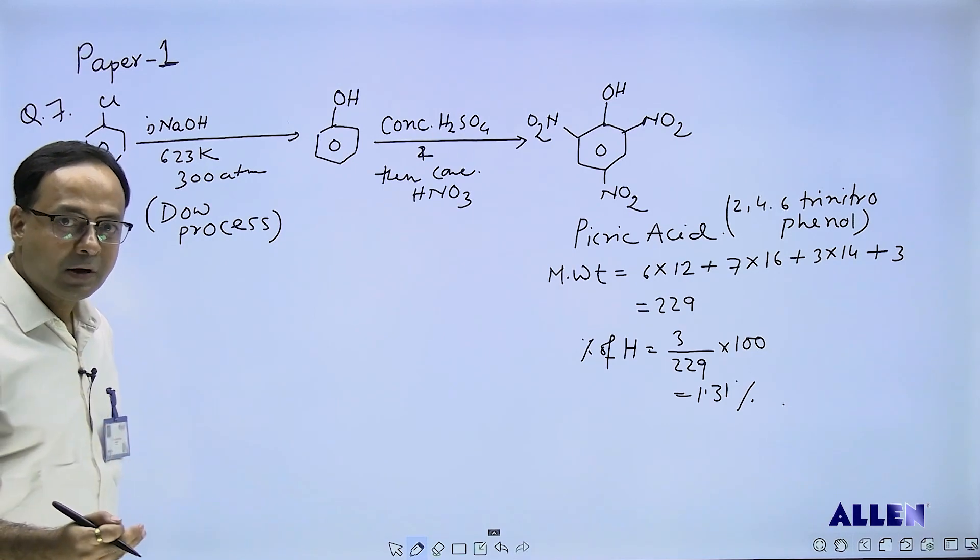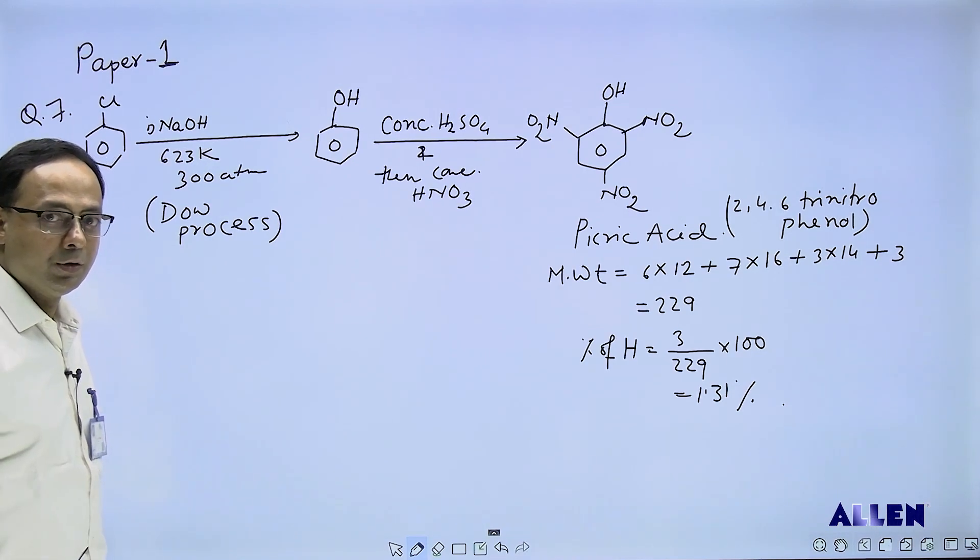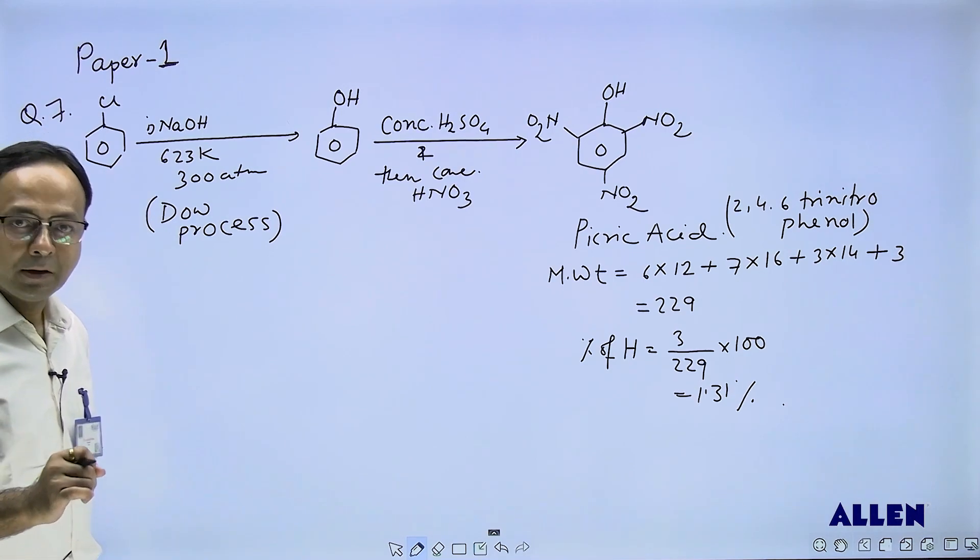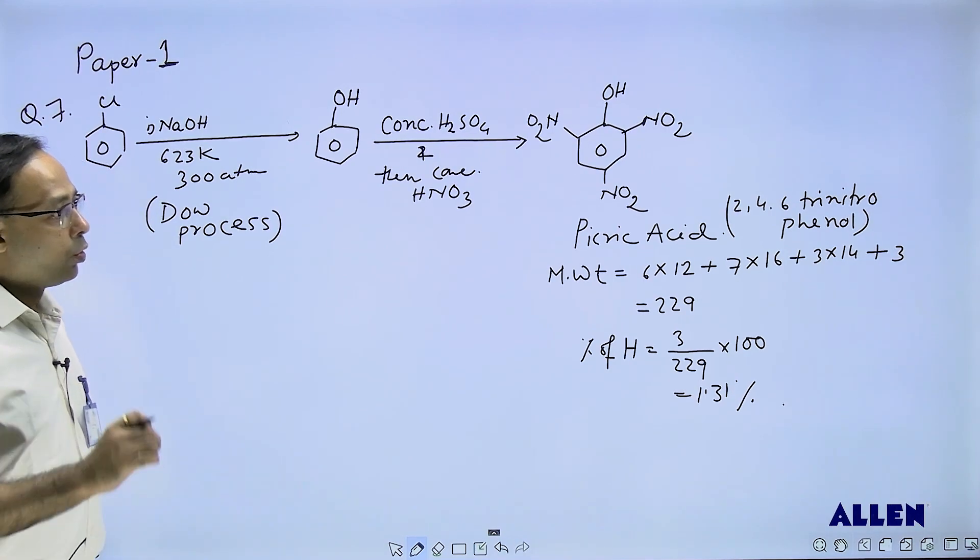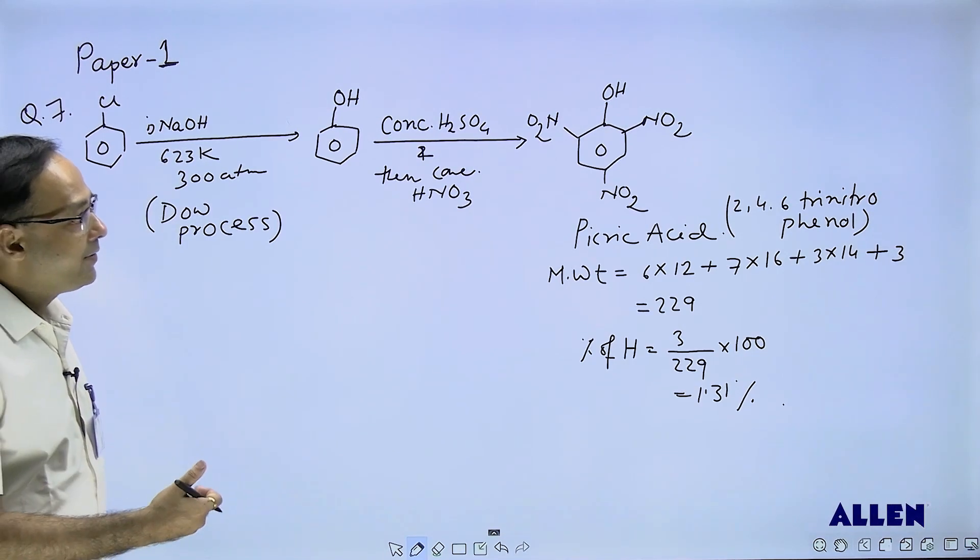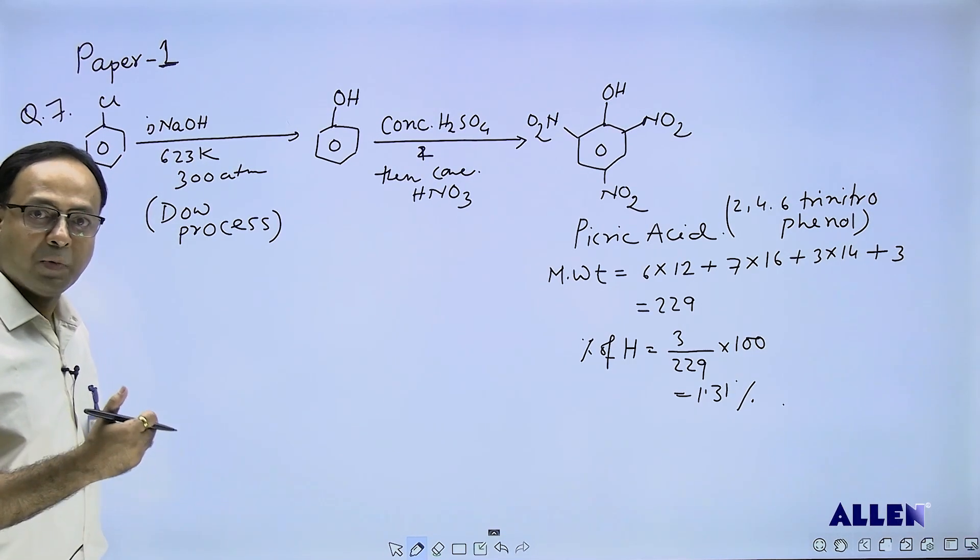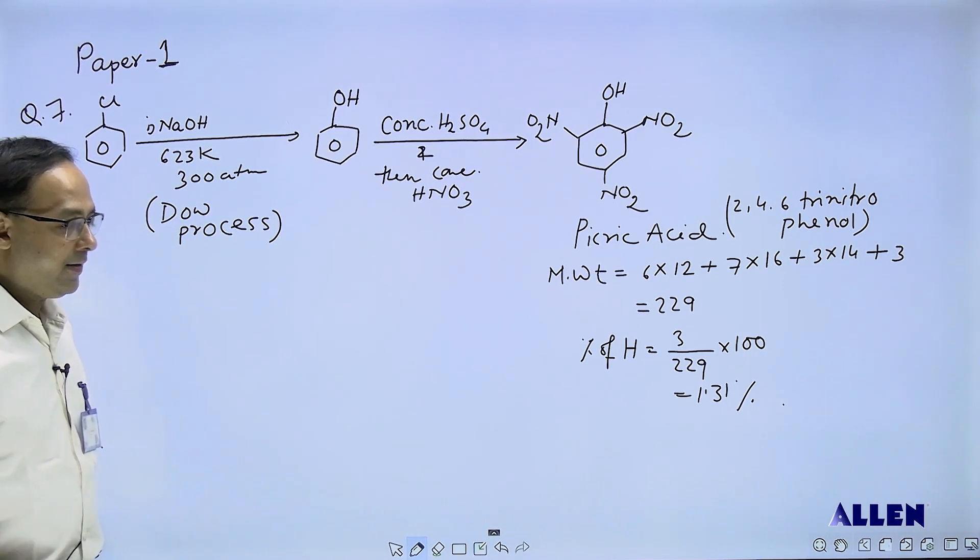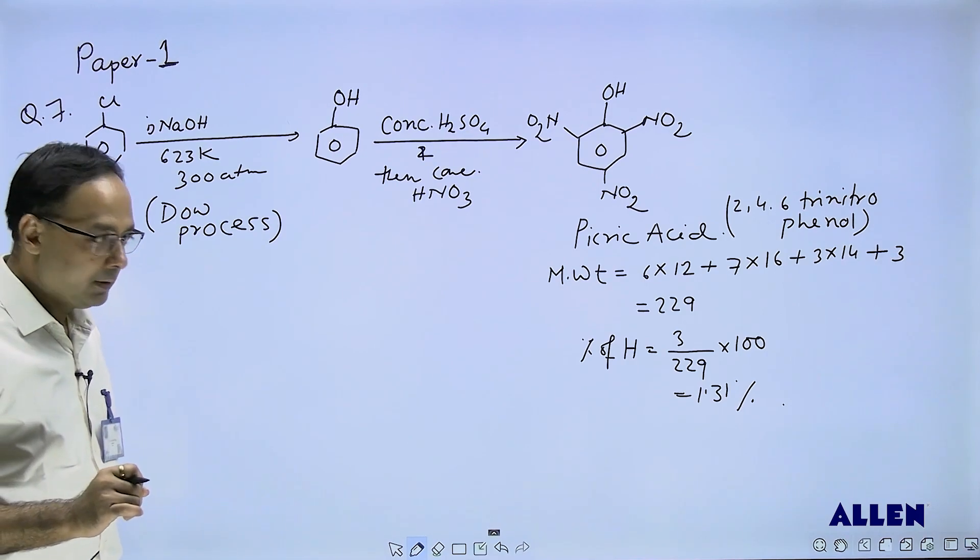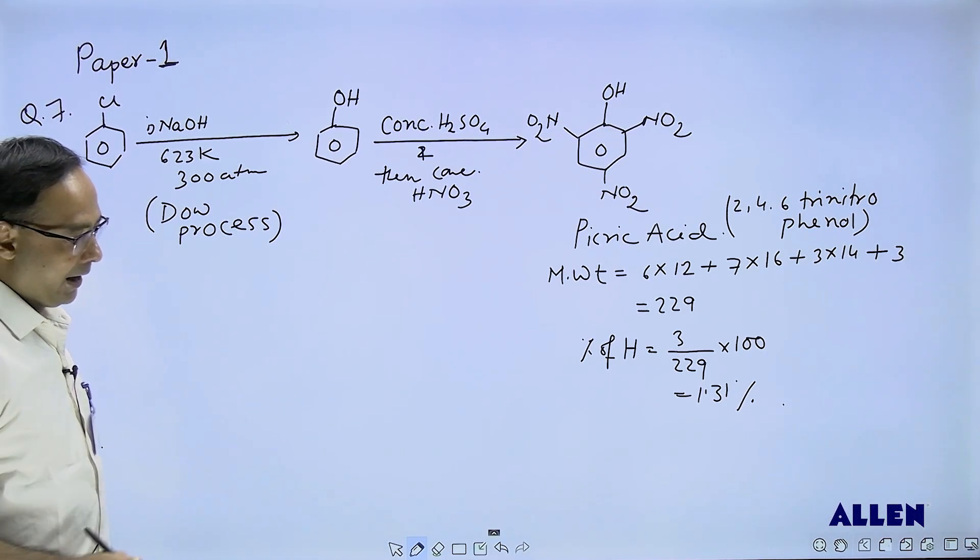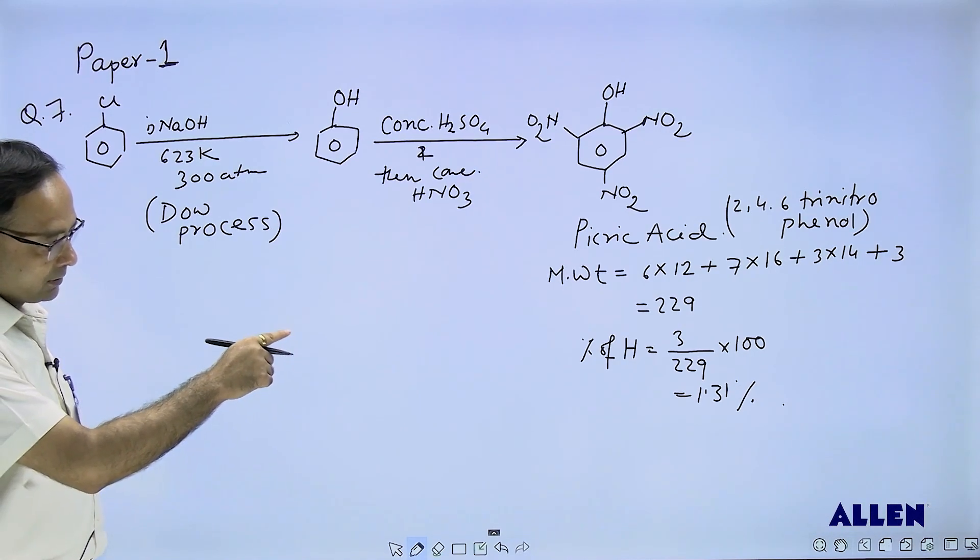The final product formed is picric acid. In the question, it was asked what is the percentage of hydrogen in picric acid. We calculate the molecular weight of picric acid, it is 229. So percentage of hydrogen is calculated and it was given 1.31 percent.